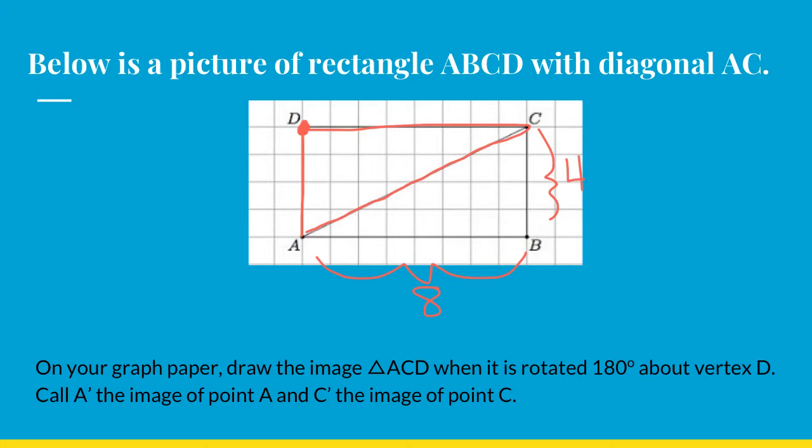The image will have A prime, C prime, and then D will be your pivot point. So that's not going to change. Go ahead and pause me while you do that, and come back when you're ready for checking.